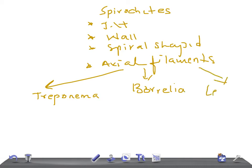Treponema pallidum is very important because it causes syphilis. There are three stages: primary is a painless chancre and is infectious; secondary involves a rash — very important and very infectious; and tertiary involves CNS involvement, with the important feature being gummas. So tertiary is for gummas, secondary is for rash, and primary is the painless chancre.